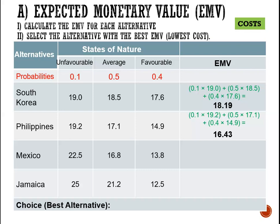For Mexico, we have 0.1 × 22.5 + 0.5 × 16.8 + 0.4 × 13.8. Adding these results gives us 16.17 million for Mexico.